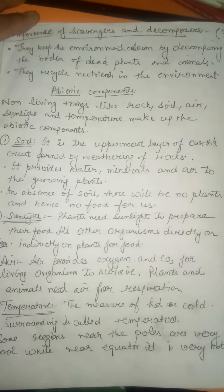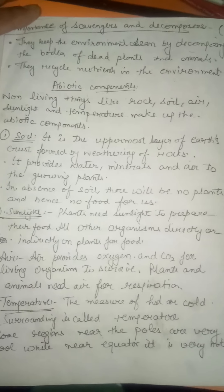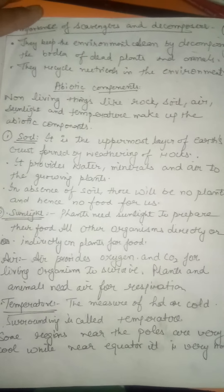Good morning everyone. Today's topic is abiotic components from Chapter 7, 'Things Around Us.' Abiotic components include all the non-living things like rocks, soil, air, sunlight, and temperature that make the environment or help in the proper growth of organisms.